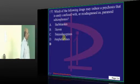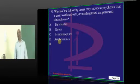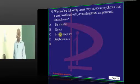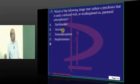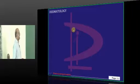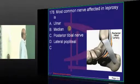Coming to paranoid schizophrenia — amphetamines are the ones which are typically associated.